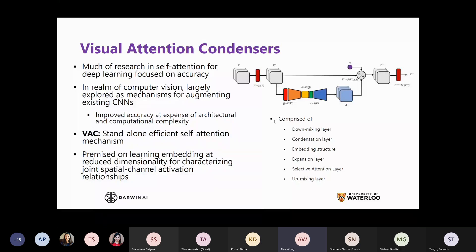In the realm of computer vision, most self-attention has been largely explored as mechanisms for augmenting existing CNNs — things like squeeze and excite — which wrap around existing CNN architectures and improve accuracy at the expense of architectural and computational complexity.